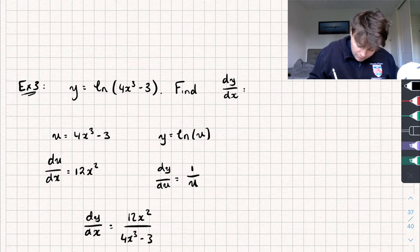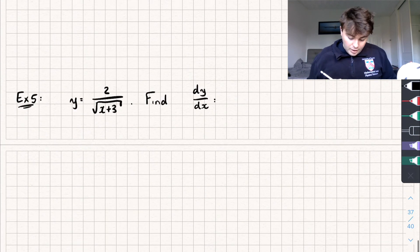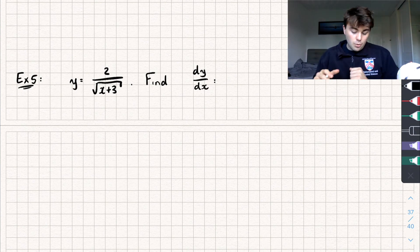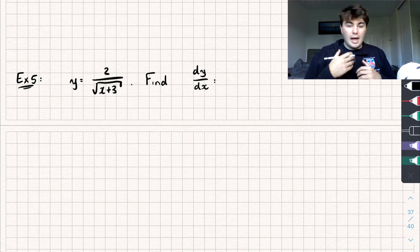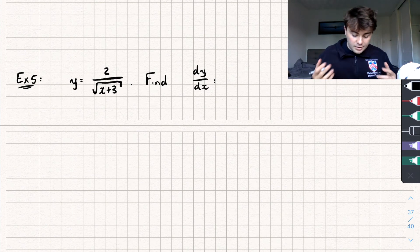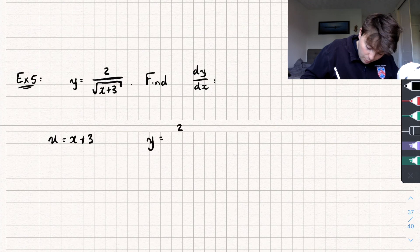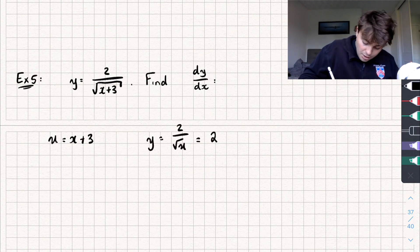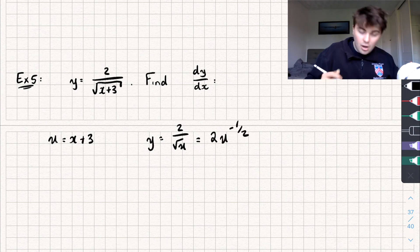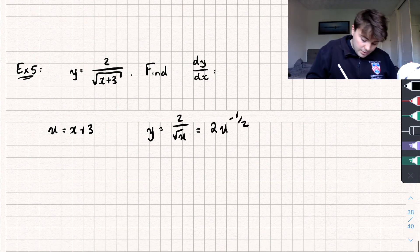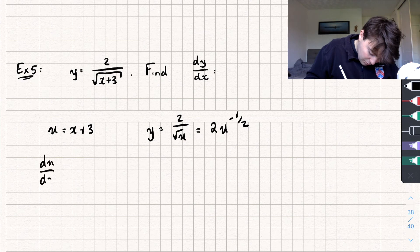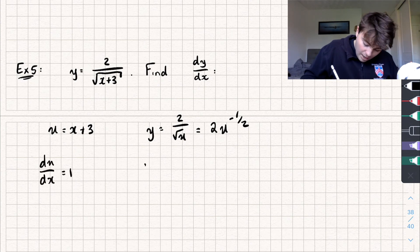For the final example we have y equals 2 over the square root of x plus 3. I'm going to let u equal x plus 3, so now we have y equaling 2 over the square root of u, which is actually equal to 2 multiplied by u to the power of negative a half. And du by dx is just going to be equal to 1.